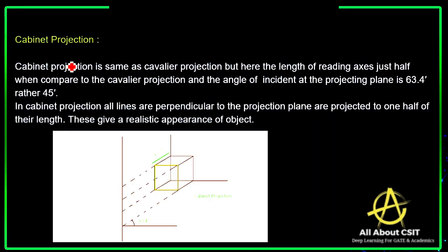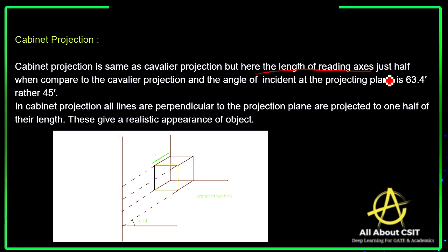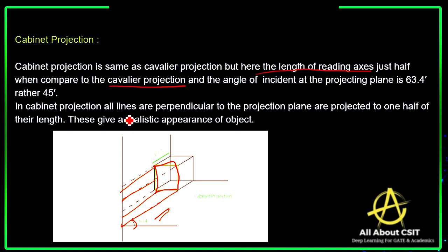Cabinet projection is similar to cavalier projection, but the difference is the length of the receding axis — it is just half compared to cavalier. The incident angle is projected at 63.4 degrees rather than 45 degrees. In cabinet projection, all lines perpendicular to the projection plane are projected to one half of their length, which gives a realistic appearance of the object.